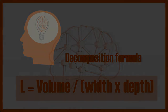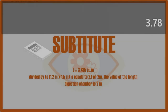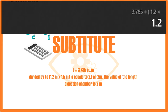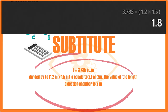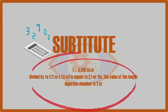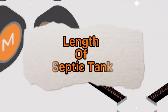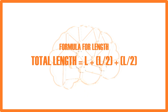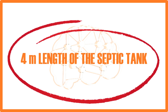To compute this, substitute the variables into the formula. L equals 3.785 cu.m. divided by 1.2 meters times 1.5 meters, which equals approximately 2.1 or 2 meters. The value of the length of the digestion chamber is 2 meters. Remember that L is equivalent to the length of the digestion chamber. To get the total length of the septic tank, you divide by 2 for the leaching well dimension and add another leaching chamber as required. The formula for total length is: Total Length = L + L/2 + L/2. The total length of the septic tank is 4 meters.